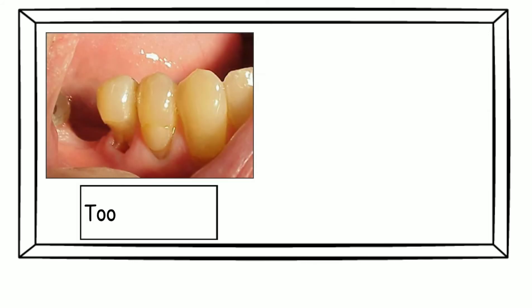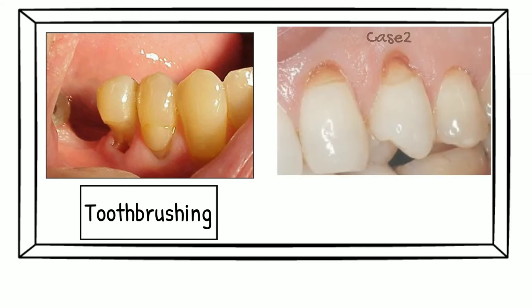In case number one, tooth brushing can be the cause, whether it is hard tooth brushing or use of abrasive toothpastes can result in this lesion. In case number two, it can be caused by habits like pipe smoking or nail biting, which can cause this V-shaped lesion.